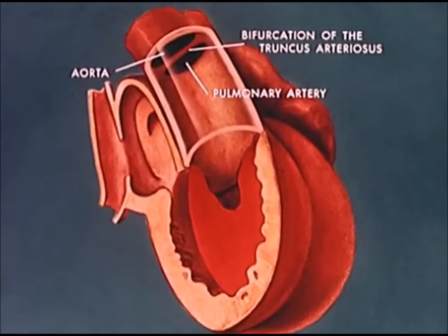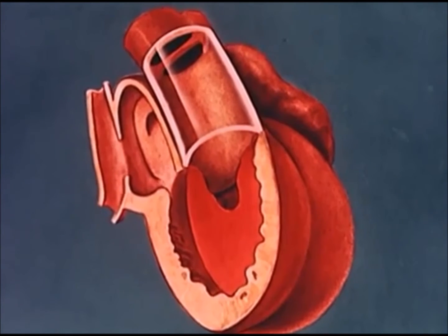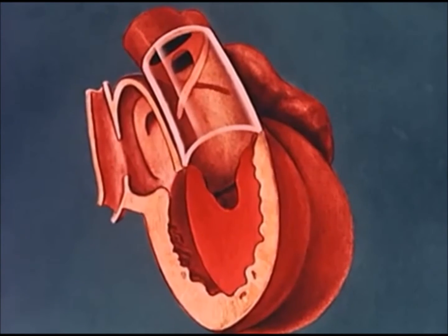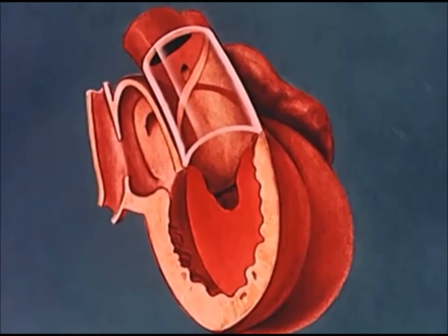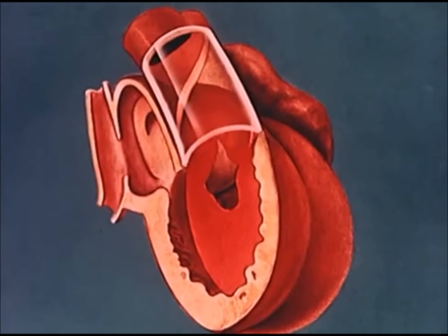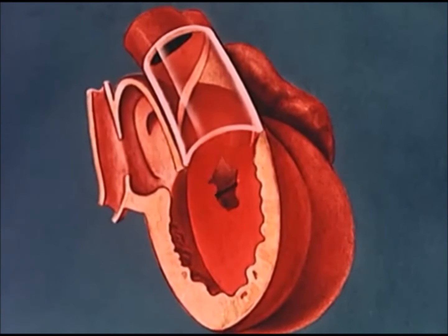A pair of ridges which develop at the bifurcation spiraled down the truncus arteriosus. They fuse along the axis of the cylinder to produce a single spiral septum extending down towards the ventricles. The interventricular foramen is obliterated by masses of endocardial tissue from the ventricular septum, by the endocardial cushions and by the spiral aortic septum.